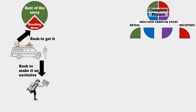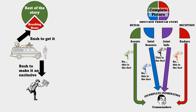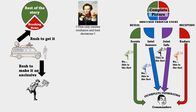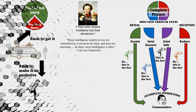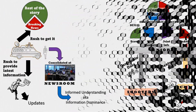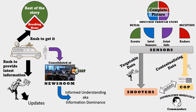Just like the news gets things wrong when they rush to be the first to report breaking news, the rush to get raw information to decision makers as fast as possible leads to leaders acting on incomplete or incorrect data. This issue is so old that our friendly general from the 1800s, Clausewitz, said: 'Many intelligence reports in war are contradictory, even more are false, and most are uncertain.' In short, most intelligence is false. This is one of two main reasons for 35 Fox All-Source Analysts.